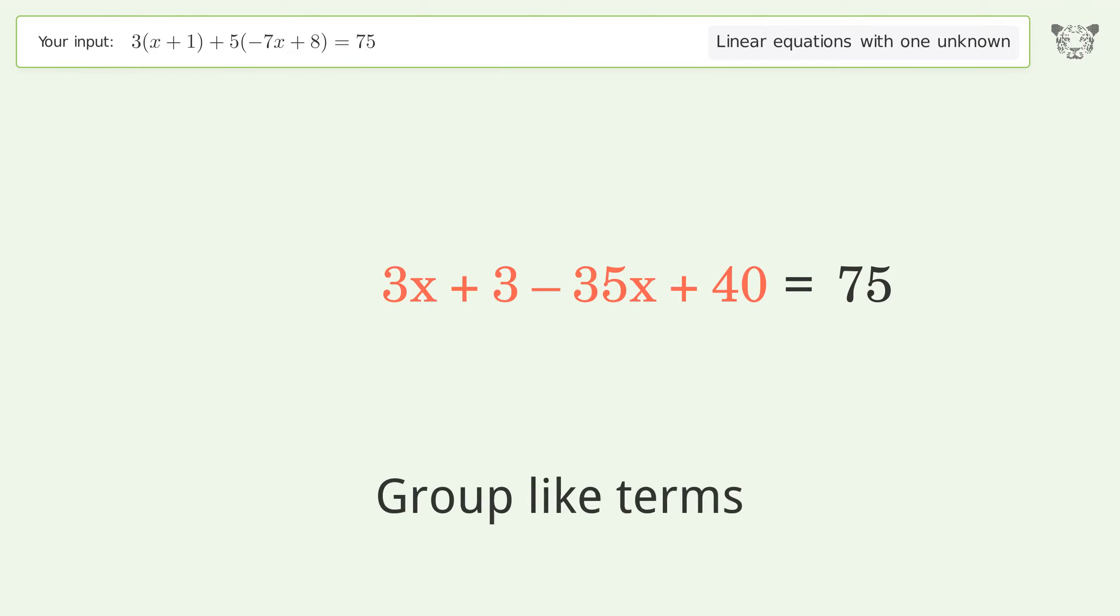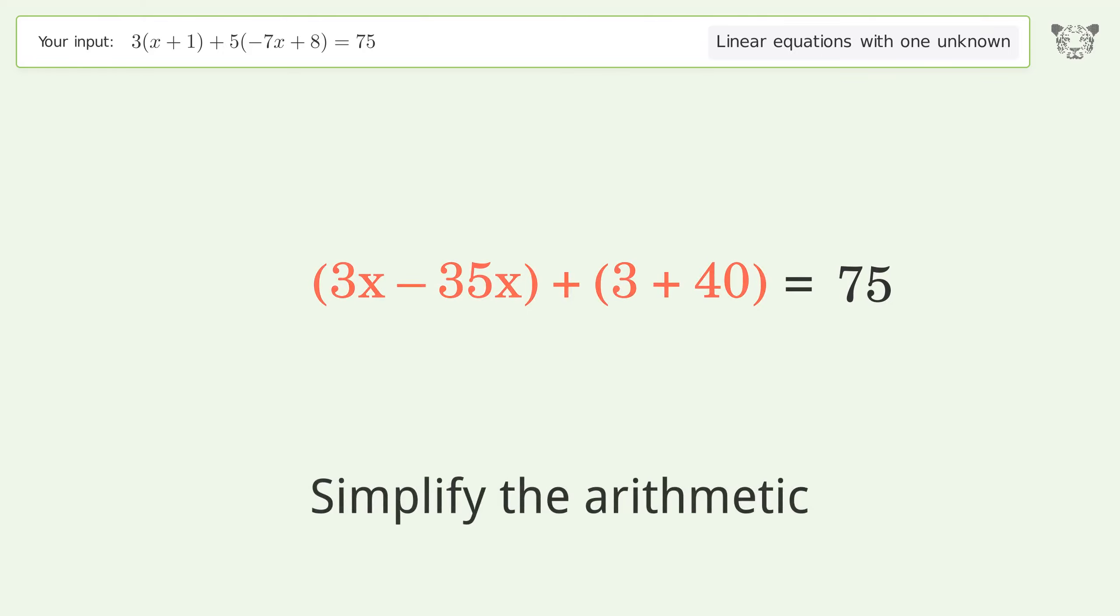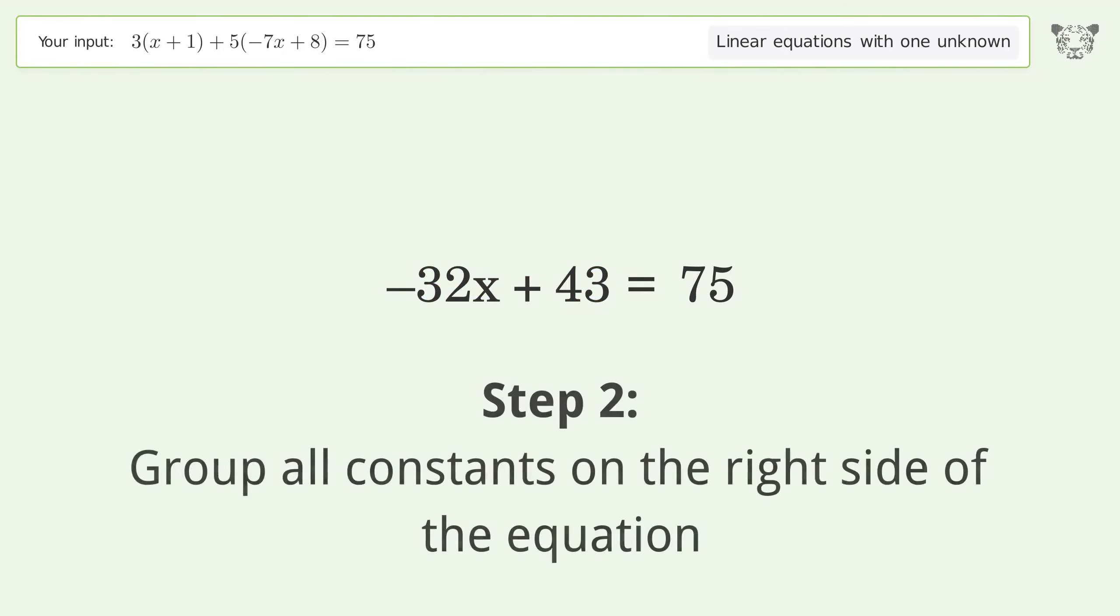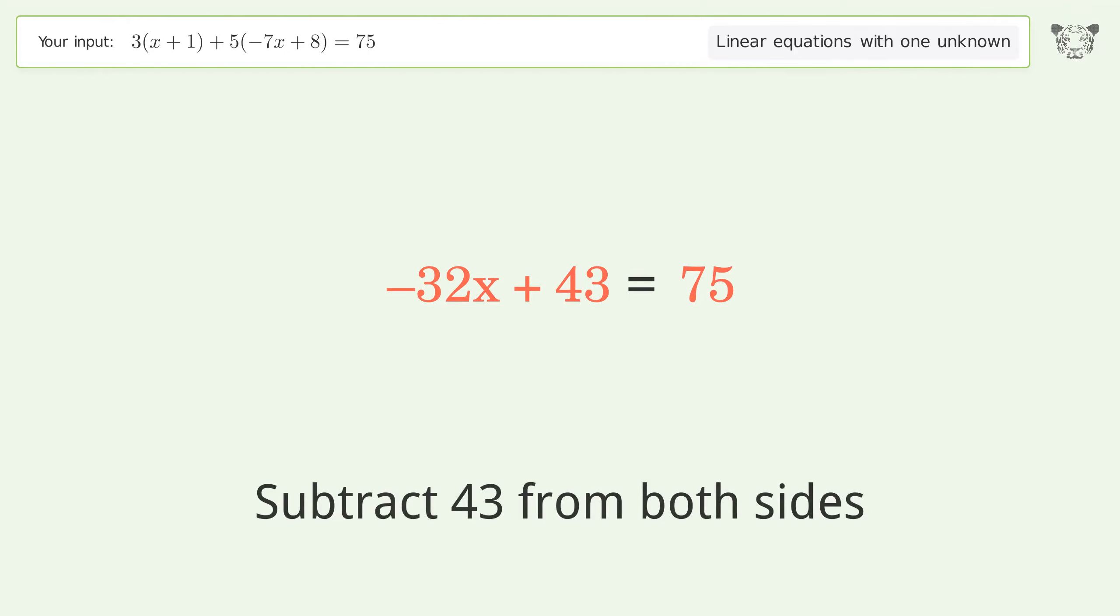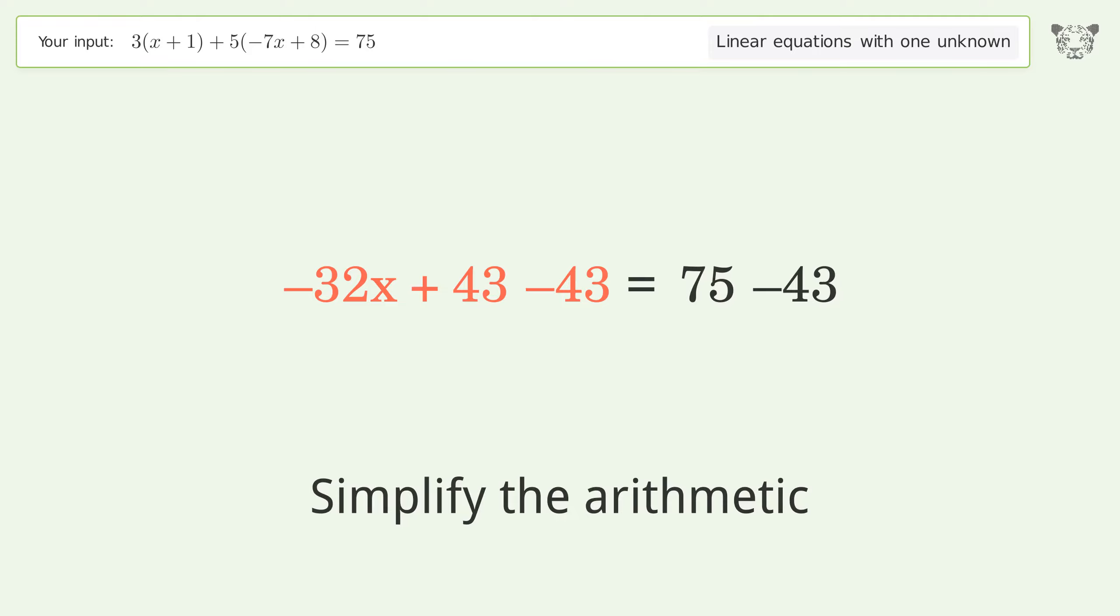Group like terms. Simplify the arithmetic. Group all constants on the right side of the equation. Subtract 43 from both sides. Simplify the arithmetic.